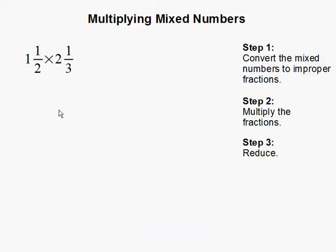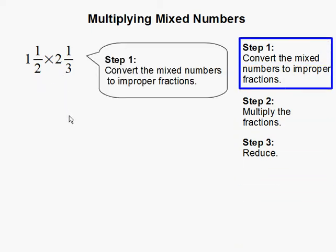Multiplying mixed numbers. In this problem, we have 1 and 1 half times 2 and 1 third. Step 1. Convert the mixed numbers to improper fractions.